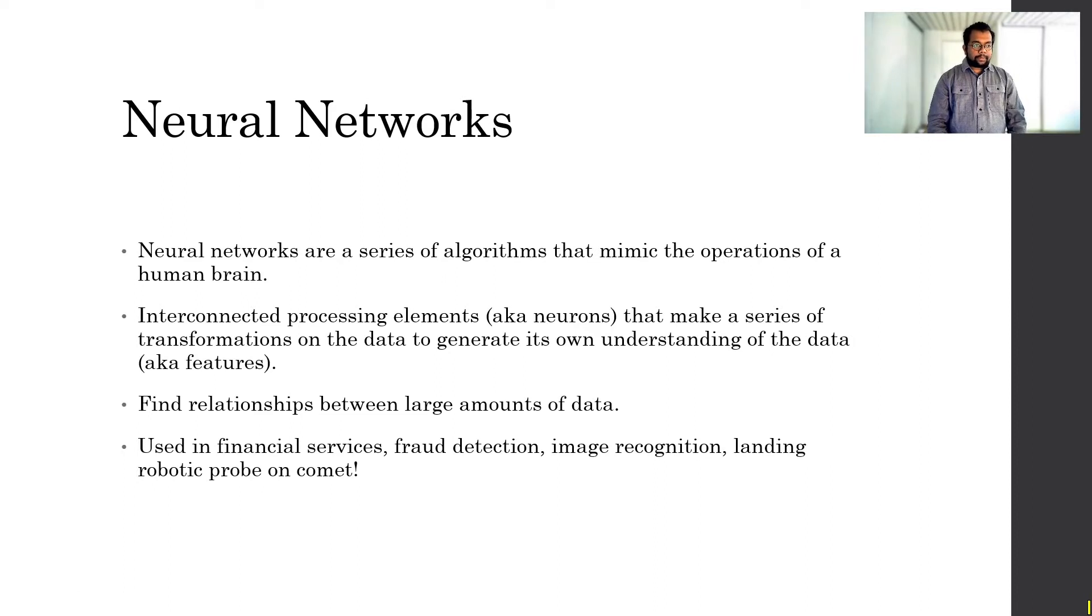What are neural networks? Neural networks are a series of algorithms that mimic the operation of a human brain. These are interconnected processing elements, such as neurons, that make a series of transformations of the data to generate its own understanding of the data, which we call features. It finds a relationship between large amounts of data, and it's been used in many fields, such as financial services, fraud detection, image recognition. It's even used in landing a robotic probe on a comet.